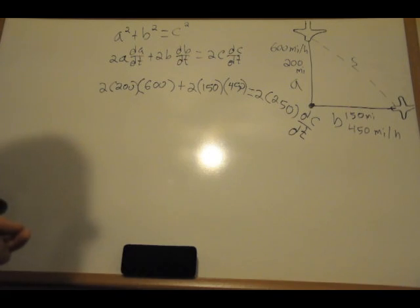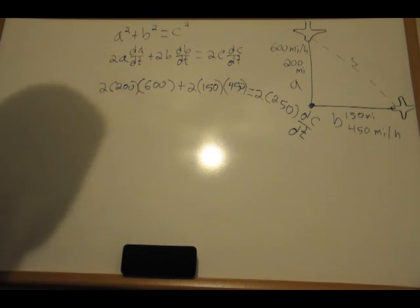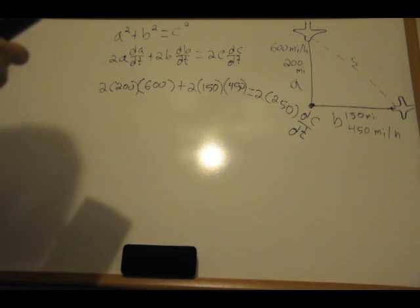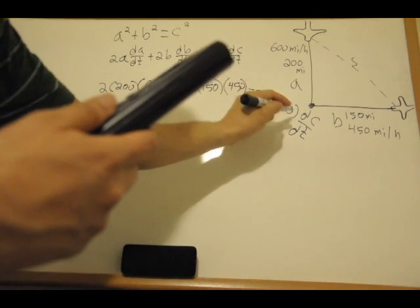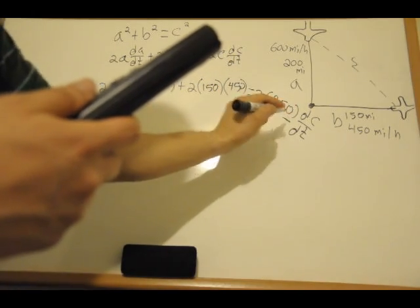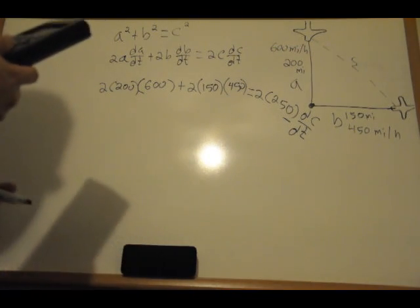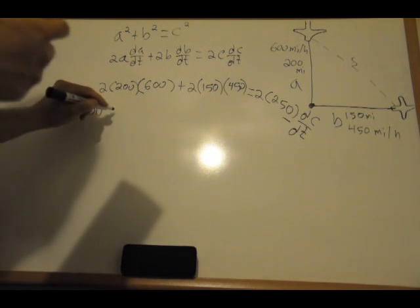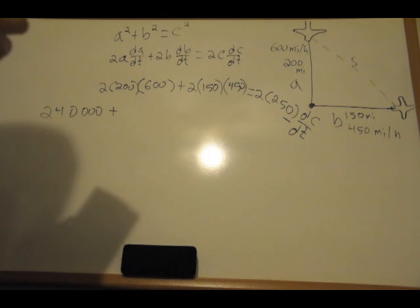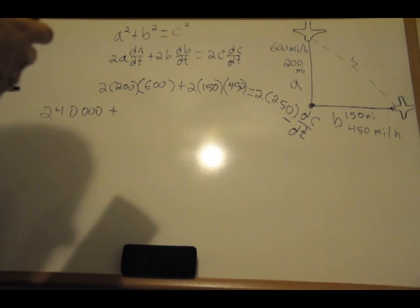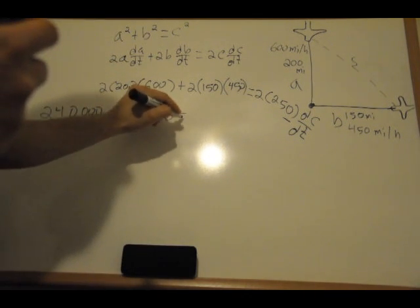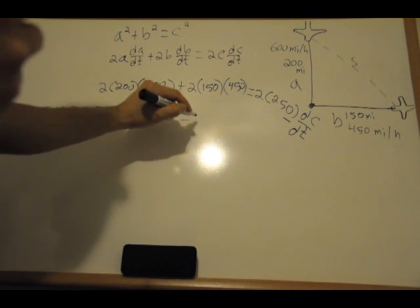So c is 250, dc/dt. Now we just do these calculations. Two times 200 times 600, and this is negative of course because this distance is decreasing. So that's 240,000. Plus two times 150 times 450 - plus 135,000.